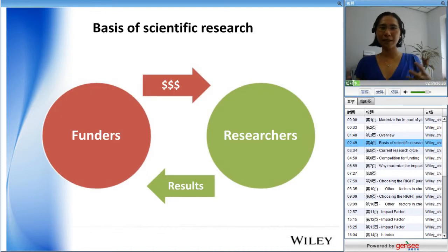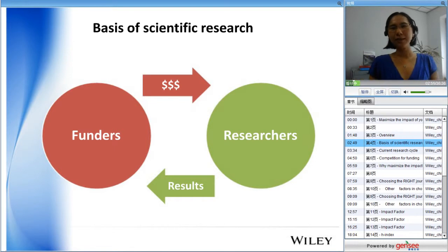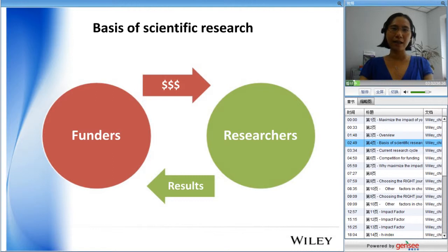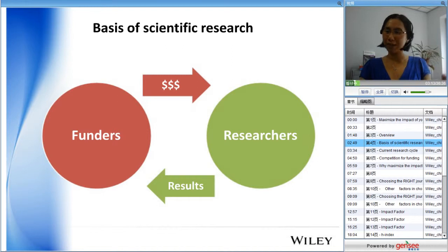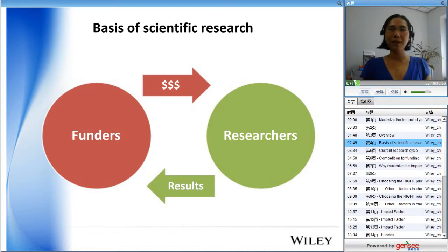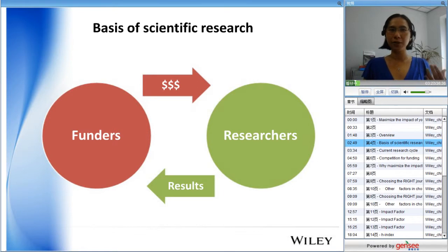Let's take a step back and look at the basis of scientific research. The basic tenet is that funders provide you with funds to do your research. Researchers receive these funds, carry out their work, and provide results. By providing results, you give funders feedback on what you've done with that money and how you plan to continue this important research.